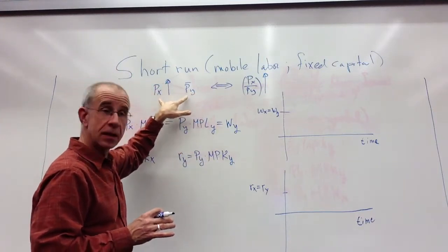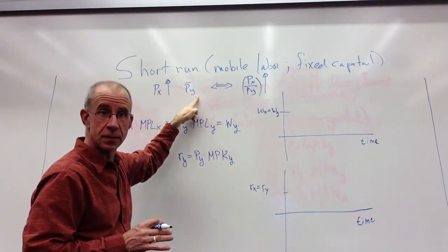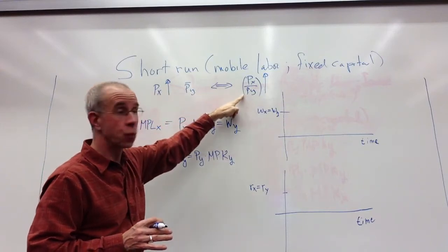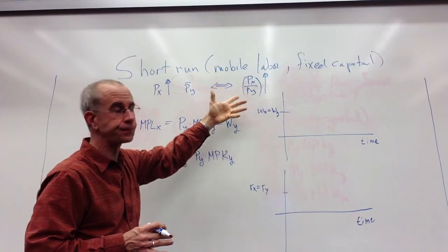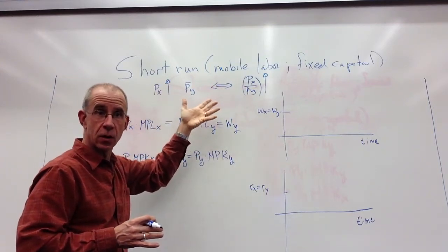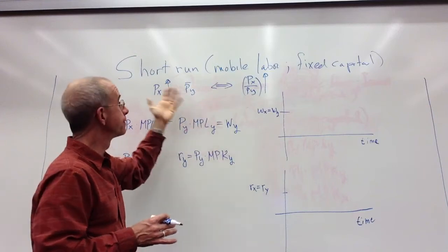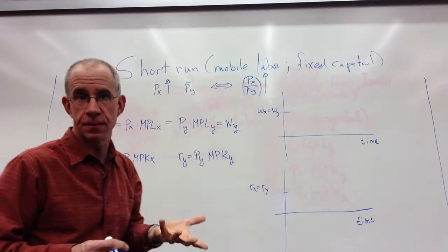Labor can move back and forth between industries. Labor can go wherever it wants. But capital has to stay in the industry where it's employed, maybe because the machinery can't be easily adapted to some other industry. We're going to be looking at a situation where the price of X rises and the price of Y stays the same. In other words, the relative price of X rises relative to Y.